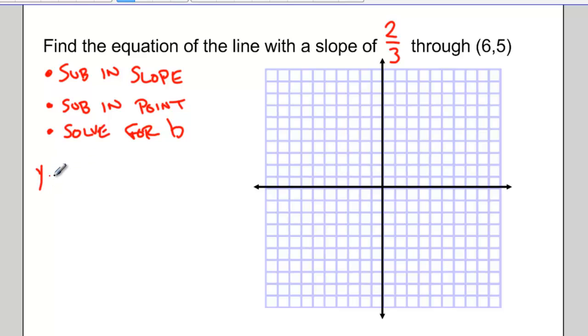So here we have y equals mx plus b. We sub in our slope of 2 thirds. Then we sub in our point 6 and 5. Multiplying this through, we get 12 thirds plus b equals 5.